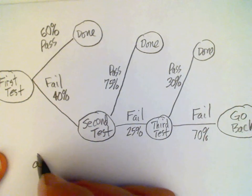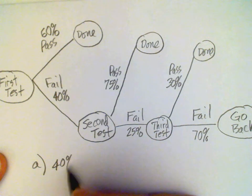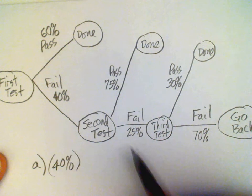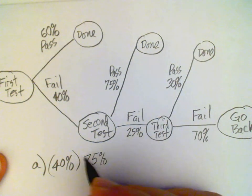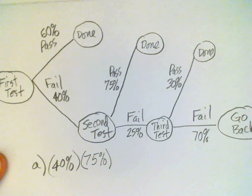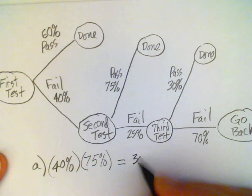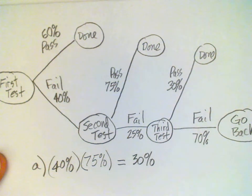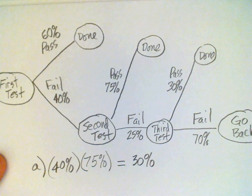So looking at our tree diagram, fail the first time is 40%, and then pass the second time is 75%. So 75% of 40%, that's 30%.